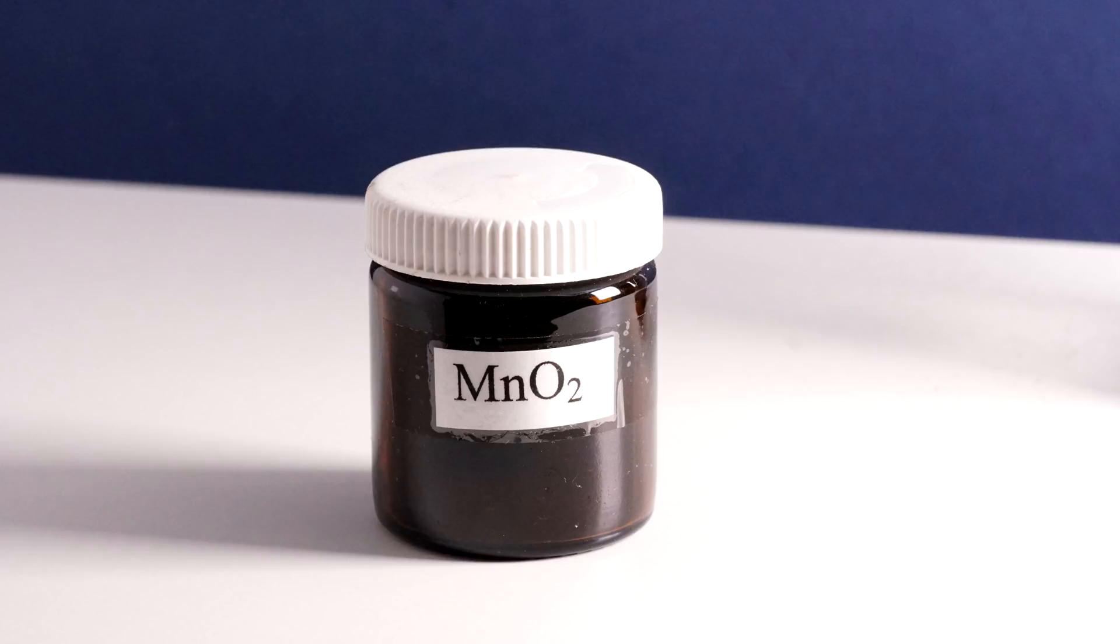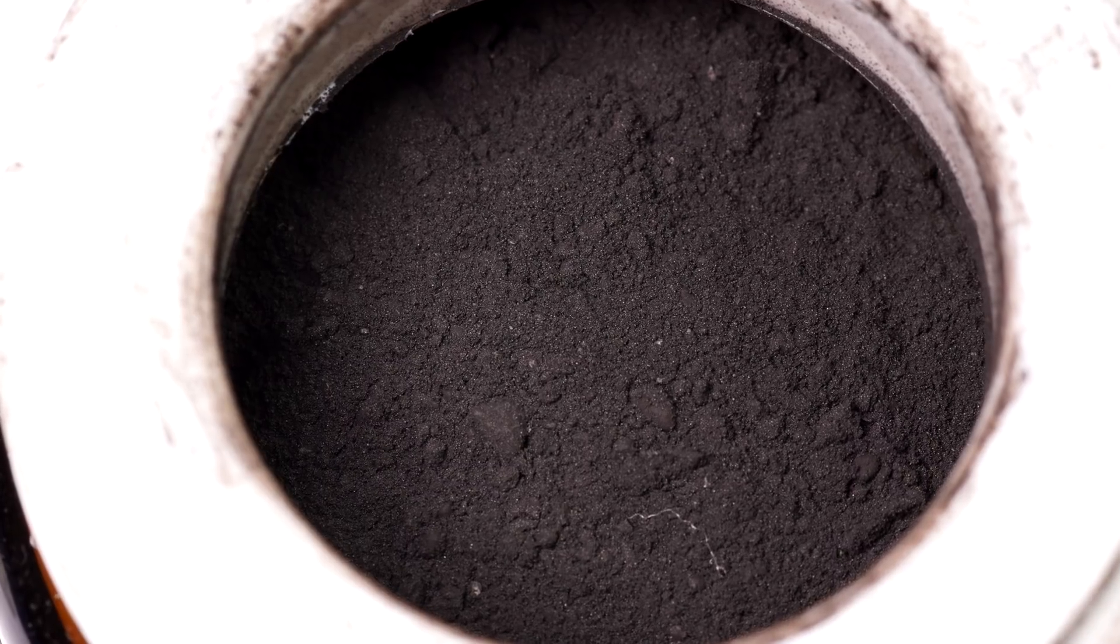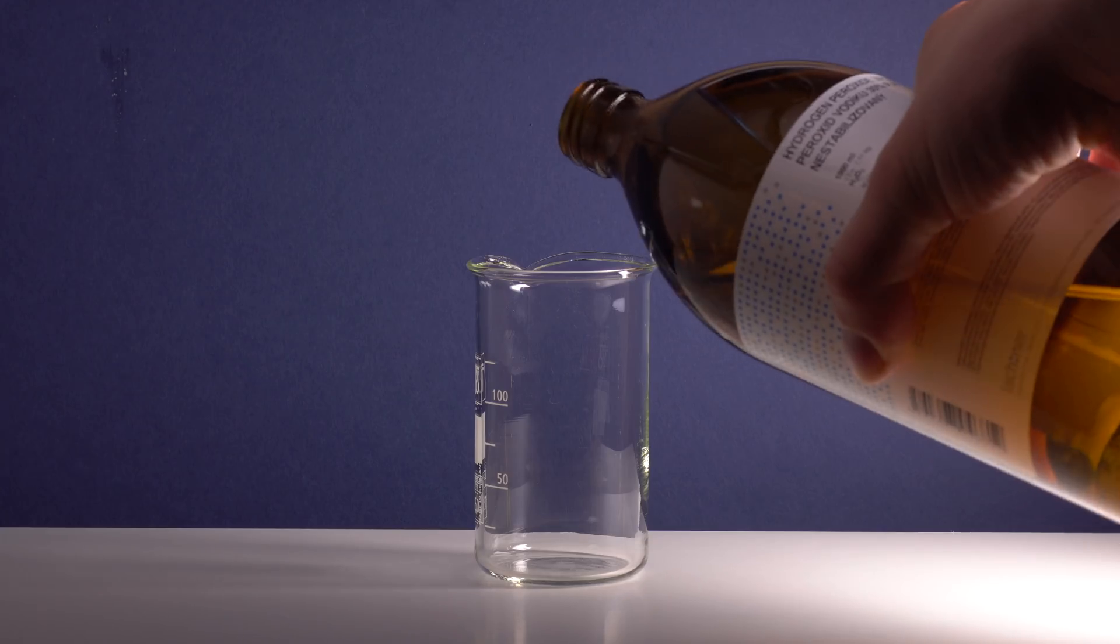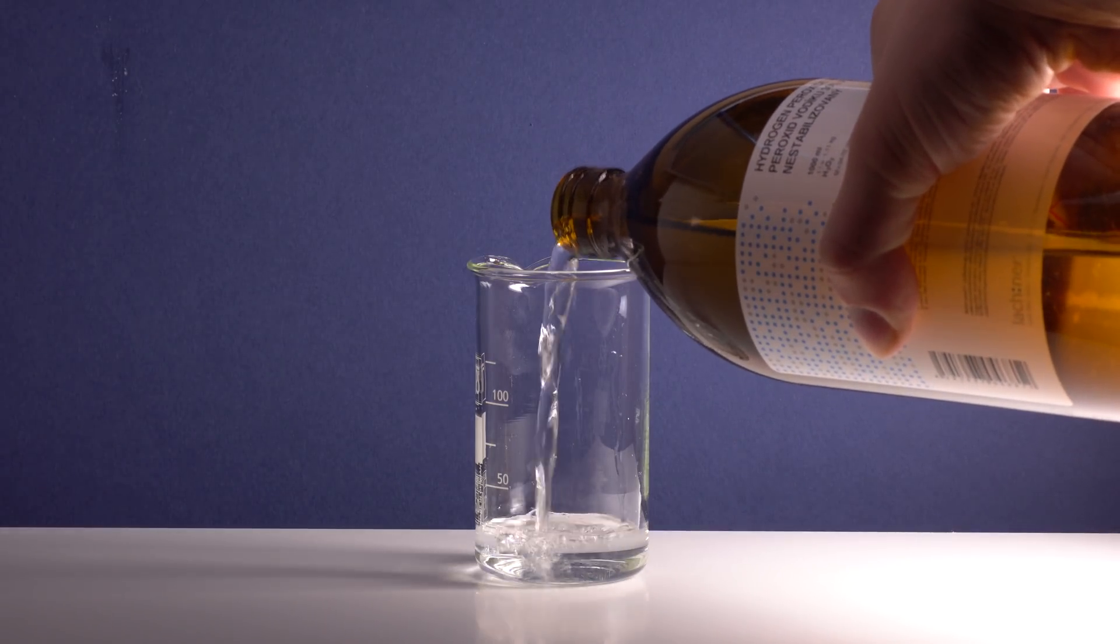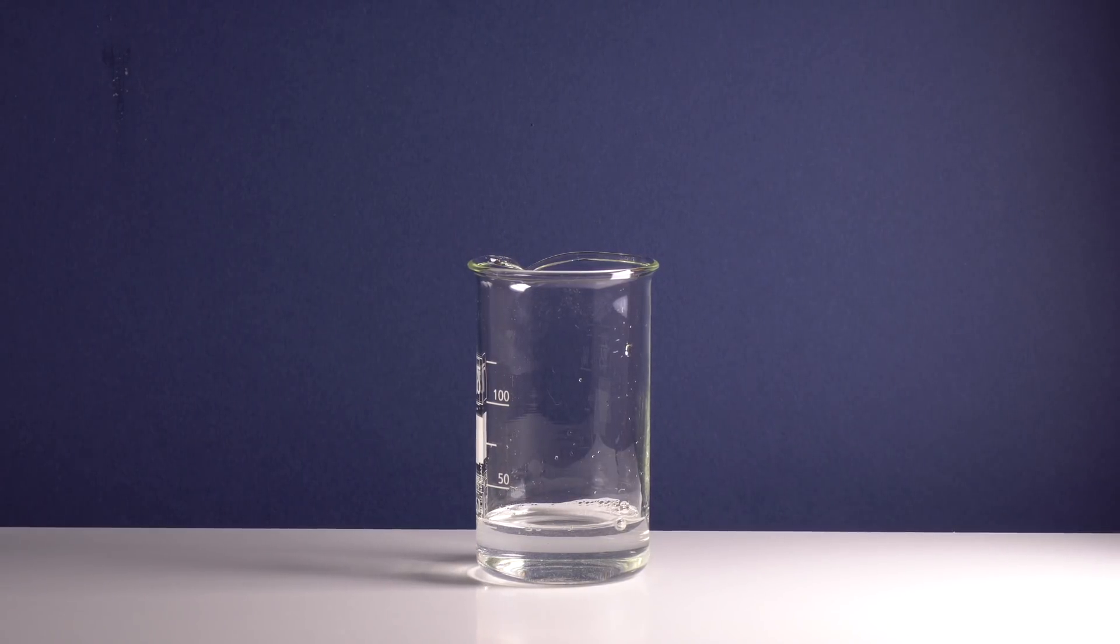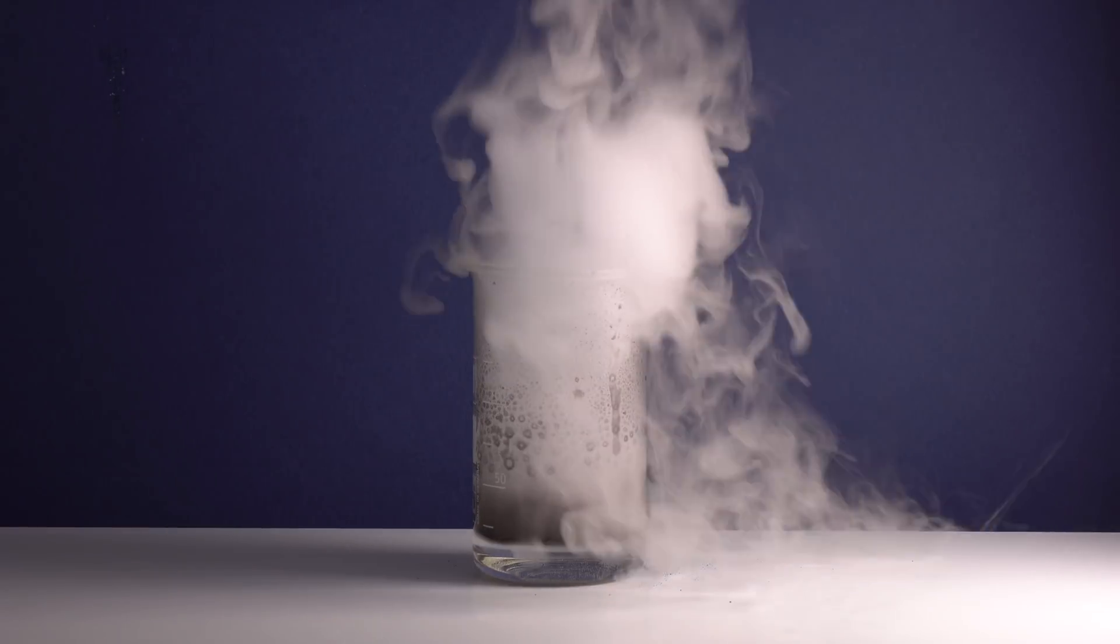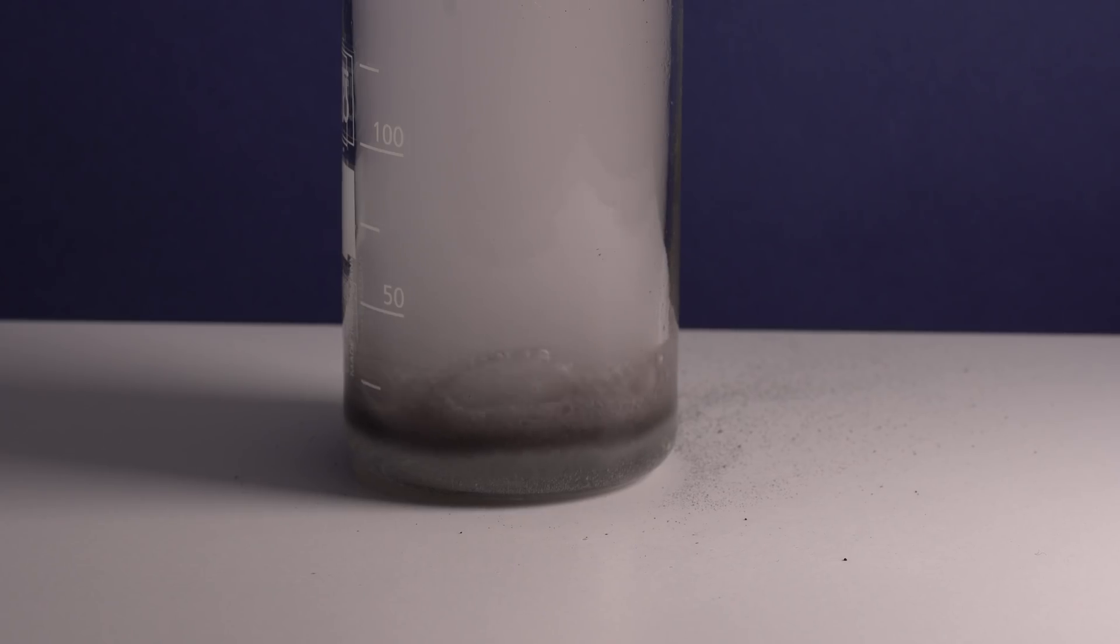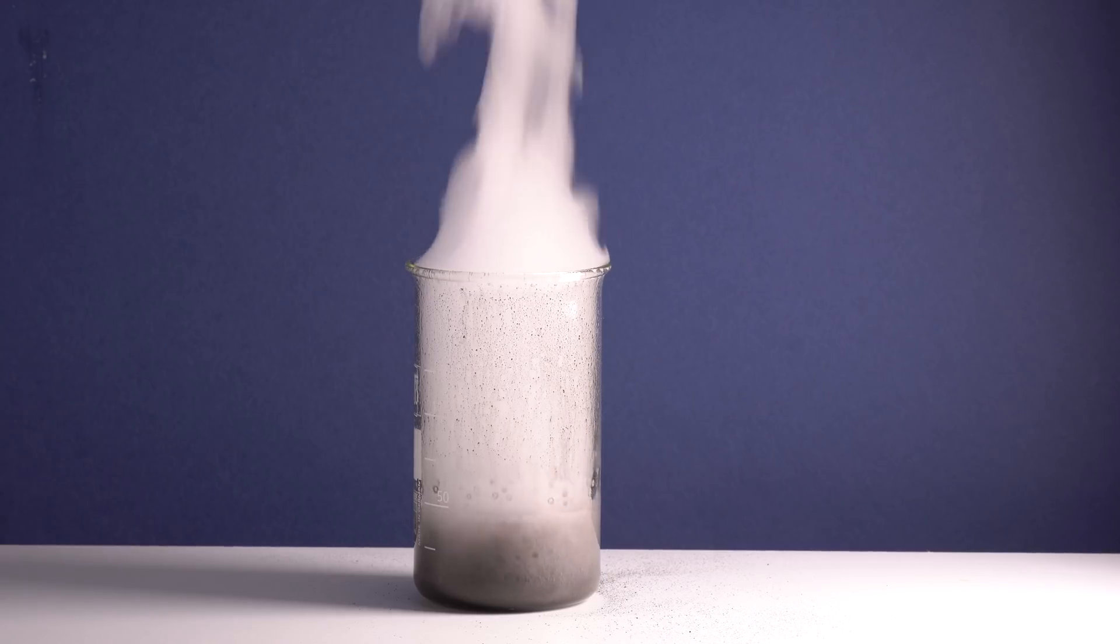Manganese dioxide is an excellent catalyst, meaning it is able to reduce the activation energy needed for the occurrence of a reaction. For example, under normal conditions, hydrogen peroxide is stable and decomposes extremely slowly, almost not noticeable. However, by adding manganese dioxide, a rapid decomposition begins of hydrogen peroxide into oxygen and water. During this reaction, the mixture gets very hot, almost boiling.